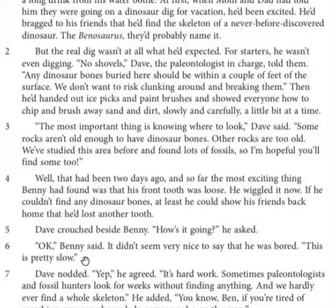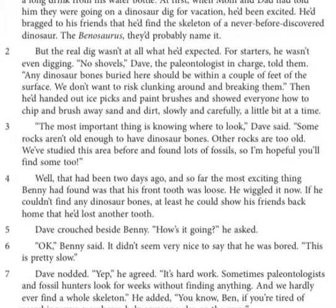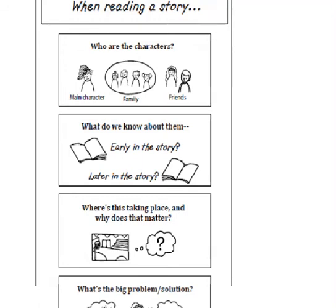I'm thinking Dave is kind of careful. He handed out brushes, he's not letting them use shovels, and he wants everyone to be very careful. If we look back at our chart, we want to think about how we can spot a problem early on. You know that stories don't just have characters and settings — they also have problems. It feels like a hint of a problem is being revealed: the dig isn't exciting. So maybe that could be the problem. I know who the characters are and what I know about them early on. I still haven't really figured out the setting, but I'm thinking along the lines of what my problem might be so far.